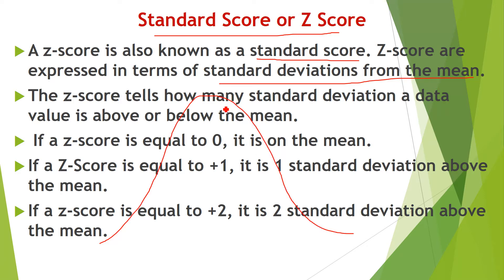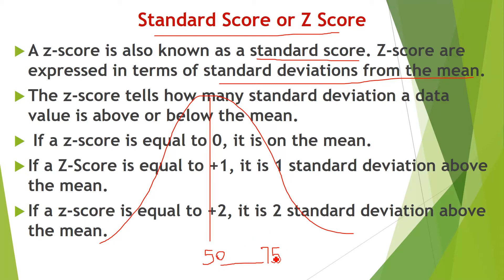Consider a bell-shaped, symmetric distribution where the mean is 50. Suppose you took a chemistry exam and scored 75 out of 100, while the class average is 50. We do not say you scored 25% more; instead, we measure this in standard deviations — we say one standard deviation above the mean, or two standard deviations above the mean. The Z score tells how many standard deviations a data value is above or below the mean.